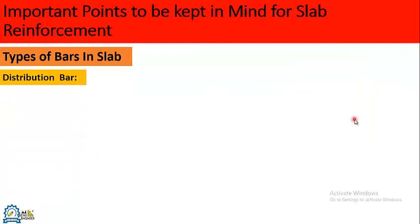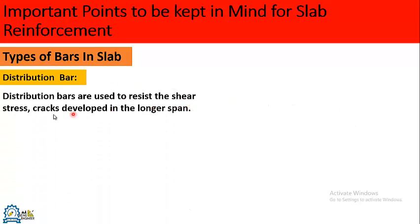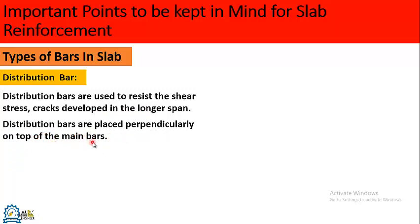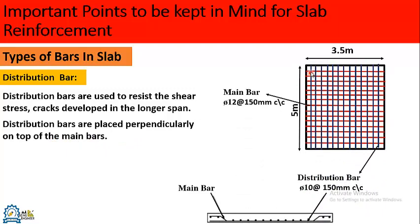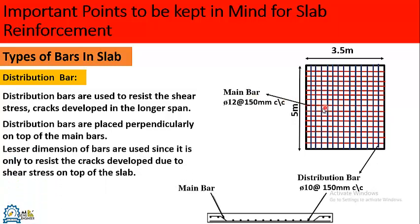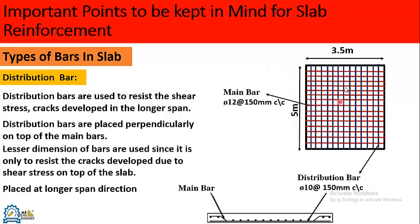The other type of bar is the distribution bar. Distribution bars are used to resist the shear stress and cracks developed in the longer span. Distribution bars are placed perpendicularly on top of the main bars. As you can see in this diagram, the bars shown in blue are the distribution bars. Lesser dimensions of bars are used since they only resist the cracks developed due to shear stress on top of the slab. These bars are placed in the longer direction — in this example, 5 meters.